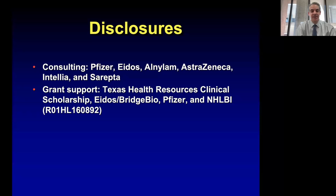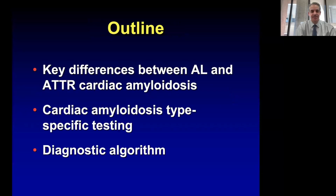I have a number of disclosures, and those are displayed on your screen. The outline of this short discussion is as follows: we will be discussing key differences between AL and ATTR cardiac amyloidosis, then transition to cardiac amyloidosis type-specific diagnostic testing, and end with a diagnostic algorithm that might be useful in clinical practice.